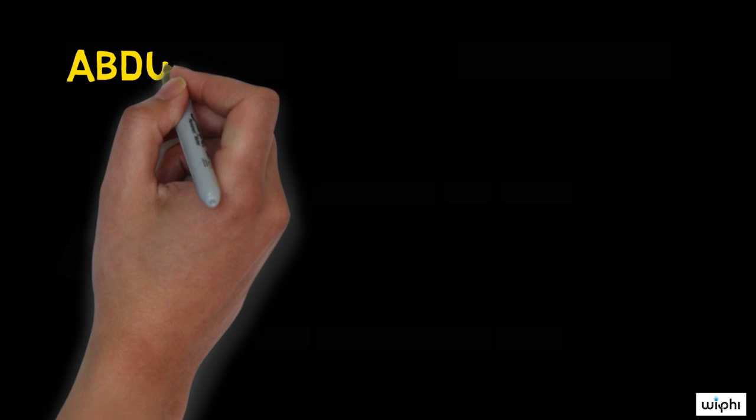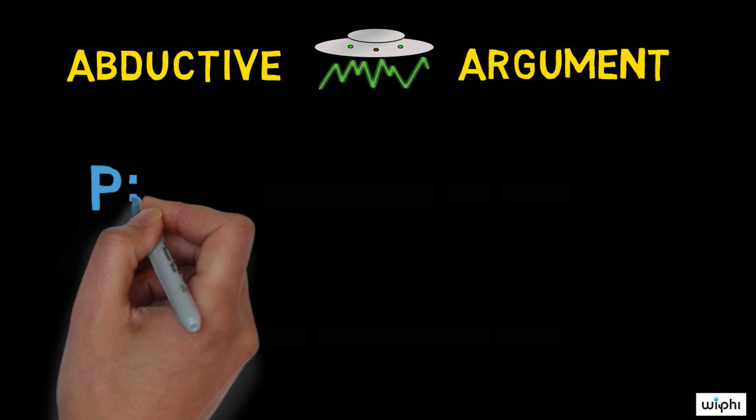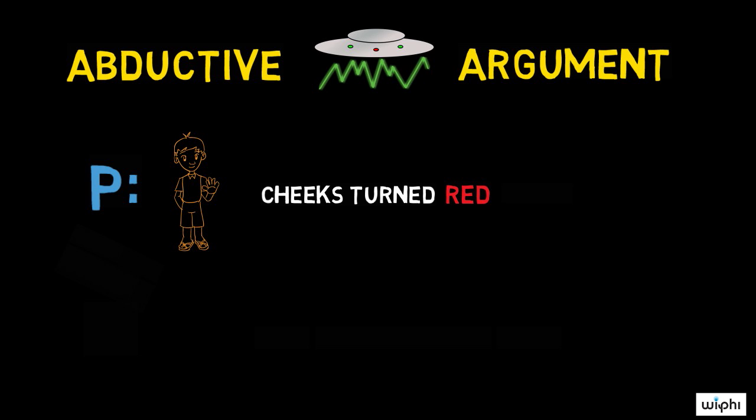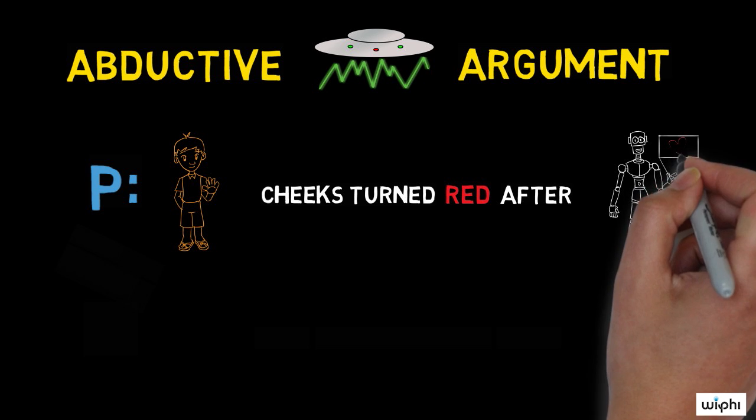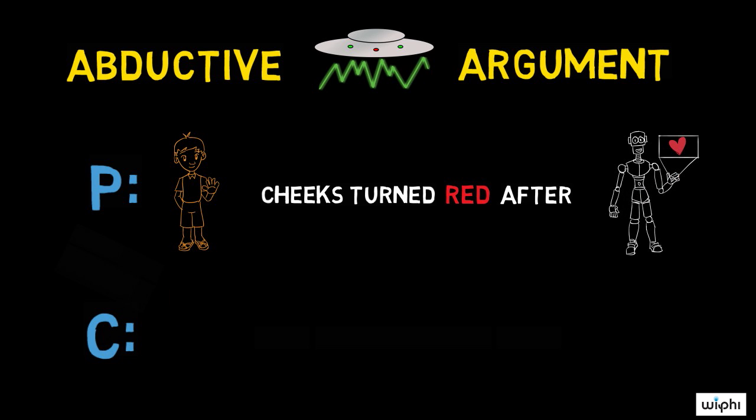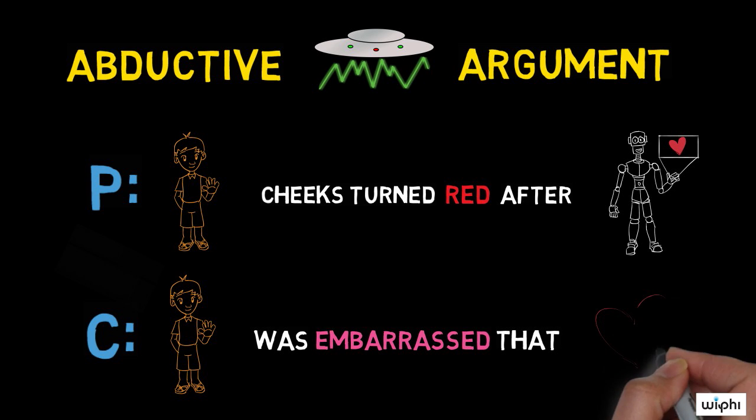This example can be turned into an abductive argument. The premise is, Charlie's cheeks turned red after I told him that Lucy had a crush on him. And the conclusion is, so Charlie was embarrassed to learn about Lucy's crush.